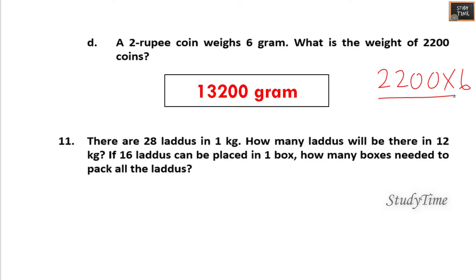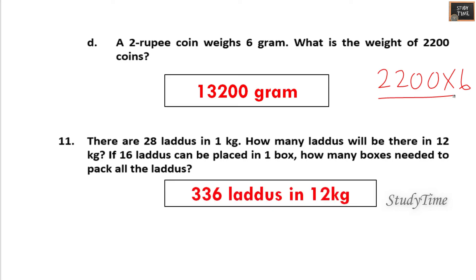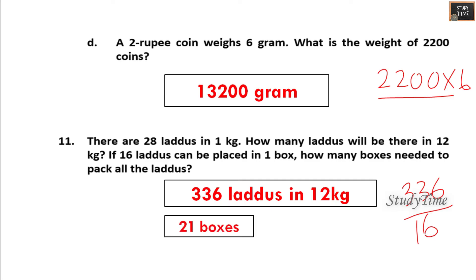There are 28 laddos in 1 kg. How many laddos will there be in 12 kg? Multiply 28 into 12 — the answer is 336 laddos in 12 kg. If 16 laddos can be placed in one box, how many boxes are needed to pack all the laddos? Divide 336 by 16 — the answer is 21 boxes.